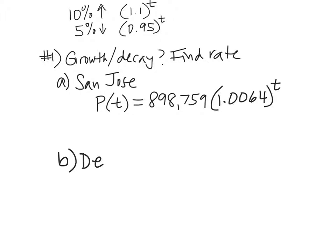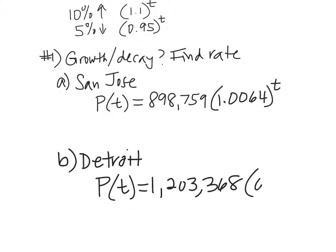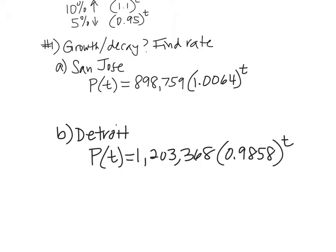So I'm going to give you 2 cities. The first city, San Jose. When you think of San Jose, what do you think of? The sharks. Yeah, some of you do. I think of that too. Okay, so here's the population of San Jose. Here is the formula that they have come up with. P of T equals 898,759 times 1.0064 to the T.